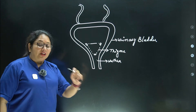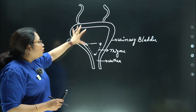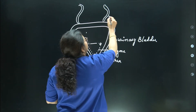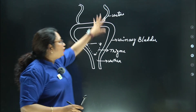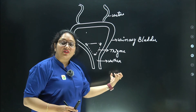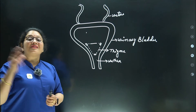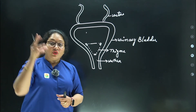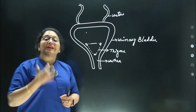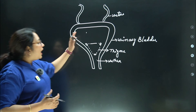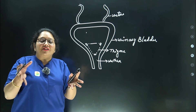Ureters, urinary bladder aur urethra — teeno ki inner lining hoti hai transitional epithelium se, jo ki ek stretchable epithelium hai. Jab urine aake fill hota hai, toh yeh fail ho jaata hai — stretch hota jaata hai. Iski capacity approximately one liter tak hoti hai, physiological aur anatomical capacity alag hoti hai.